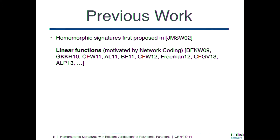That's the notion of homomorphic signatures. What do we know about realizing them? This notion was first proposed by Johnson et al. at CT-RSA 2002, and only several years later, applications to securing network coding and preventing pollution attacks rekindled attention on homomorphic signatures. There were several schemes working for the case of linear functions.